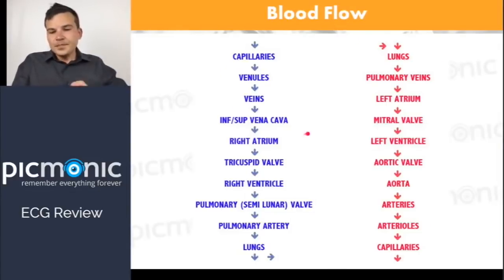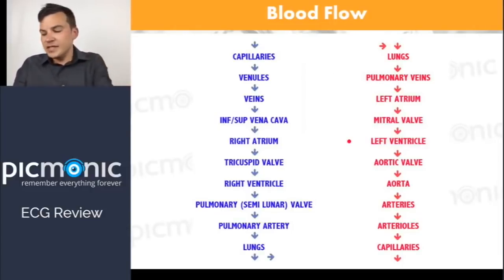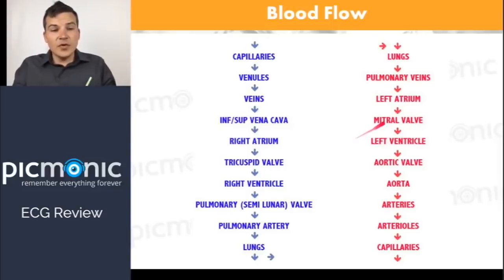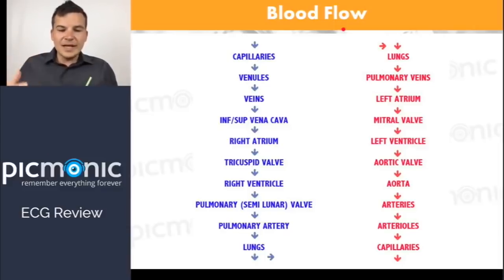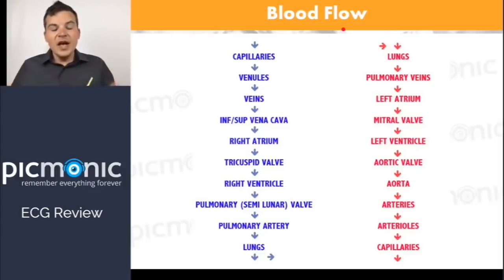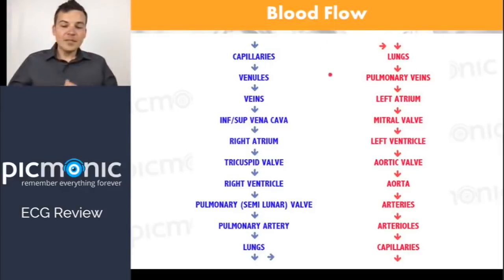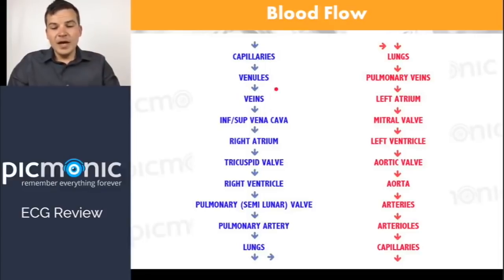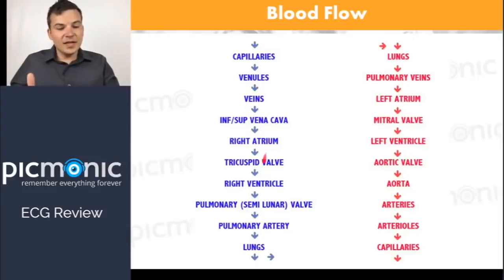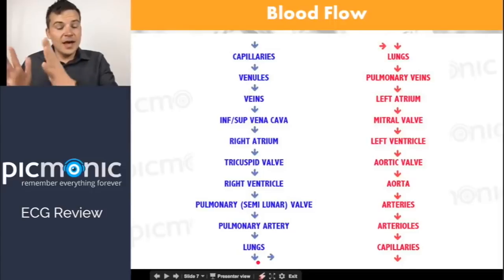Learning the blood flow through the heart is so important. We go from capillaries into venules and veins, then into the vena cava, into the right atrium. The right side of the heart carries all deoxygenated blood through the tricuspid valve into the right ventricle, and then into the pulmonary artery and the lungs. The lungs oxygenate the blood, which goes back out to the left atrium and left ventricle and then out to the body.